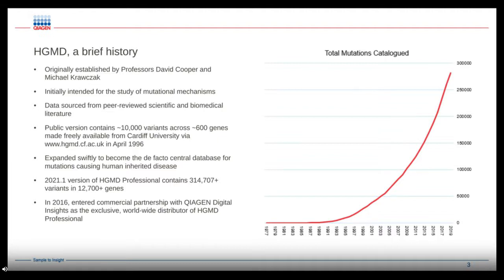Quickly, this database expanded to become the main database for any mutations that cause human inherited diseases. Our current version, the 2021.1 professional version, contains over 3 million variants in nearly 13,000 genes. So we've come a long way since 1996.